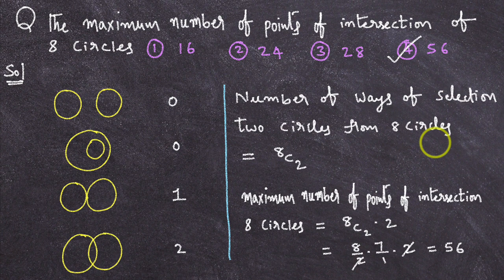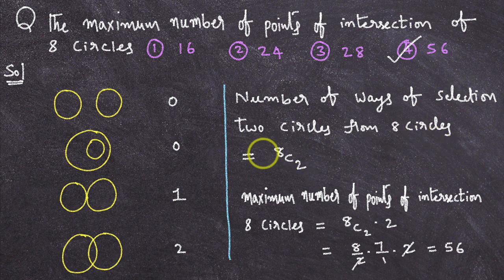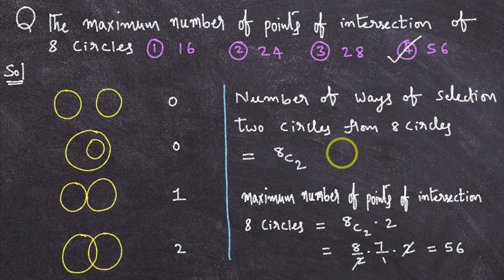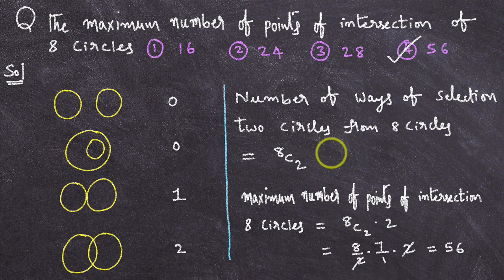How many ways you can select 2 circles from 8 circles? That is 8C2. You observe this. Number of ways of selection of 2 circles from 8 circles is 8C2. 8C2 value is 28. If I calculate 8C2 value, its answer is 28.